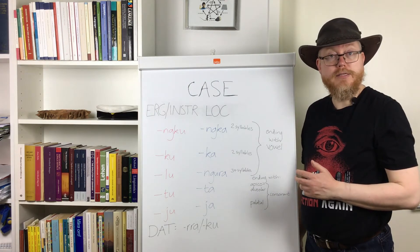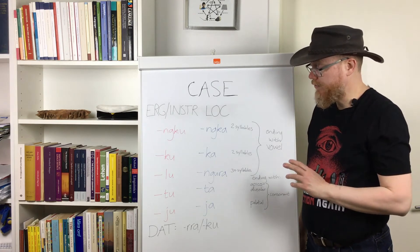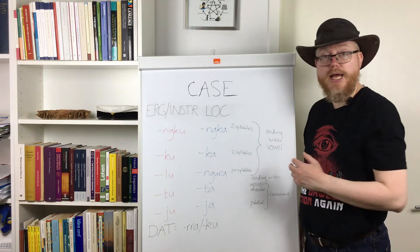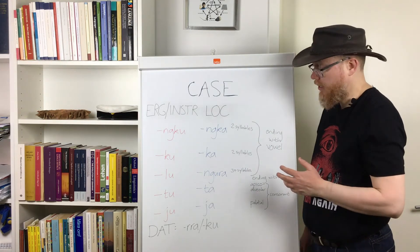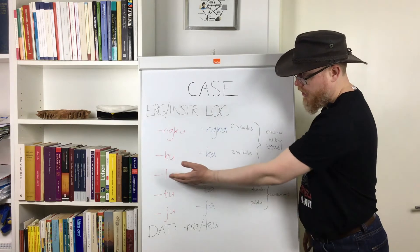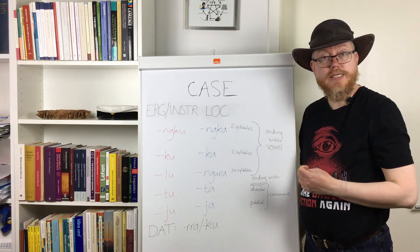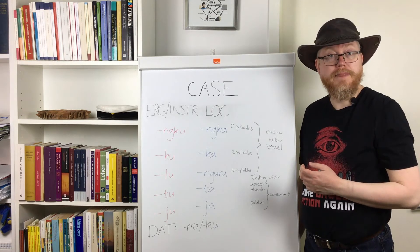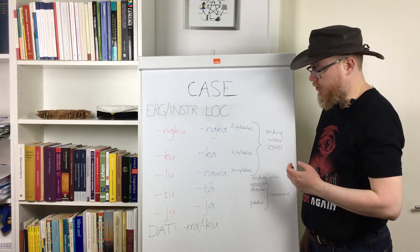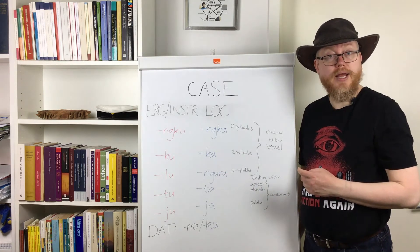Now it may vary between languages exactly what allomorphs they have and how many they make use of. But 'lu' is very widespread as an ergative suffix, as is the corresponding locative 'la'. As you can see, we don't get 'la' in Ngara — instead we have 'ngura'.